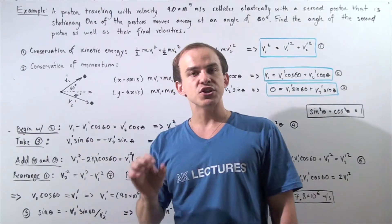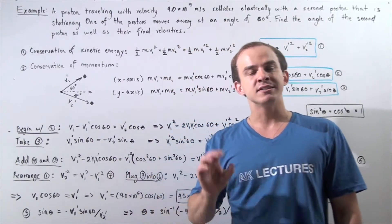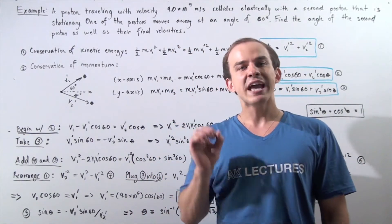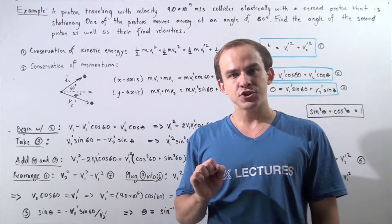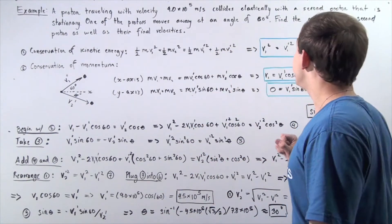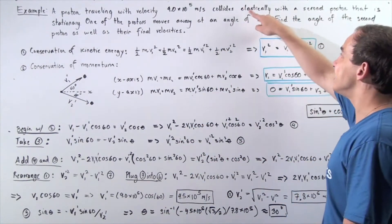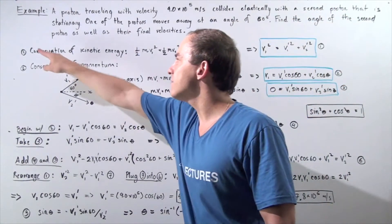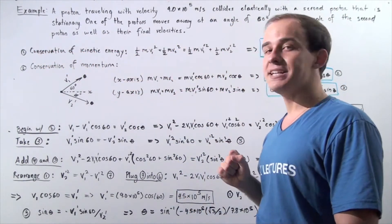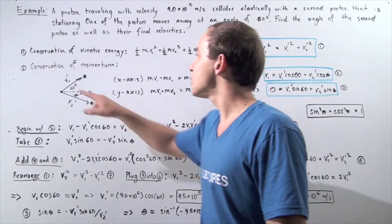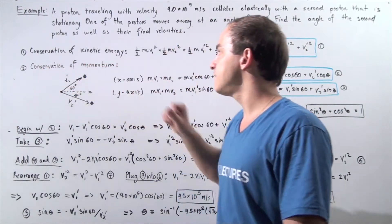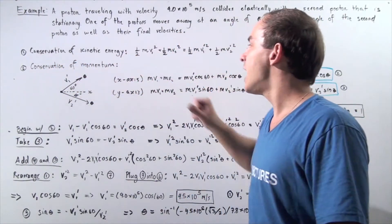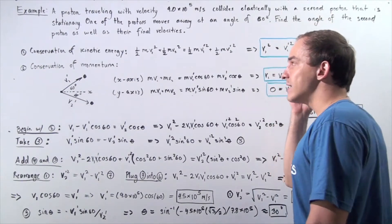We have three unknowns, and to solve for three unknowns we need three equations. Because we are dealing with an elastic collision, we have conservation of kinetic energy as well as conservation of momentum. Let's begin with the conservation of kinetic energy.